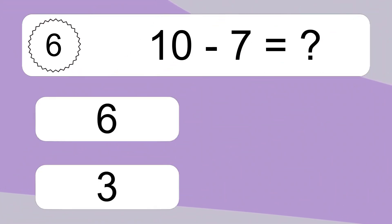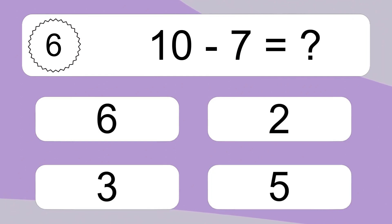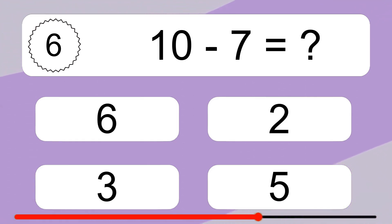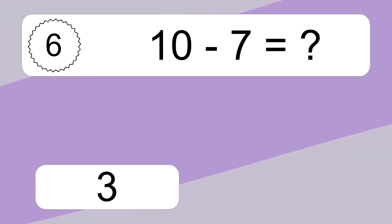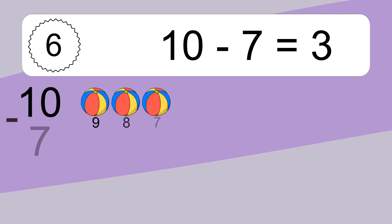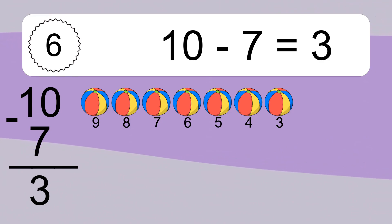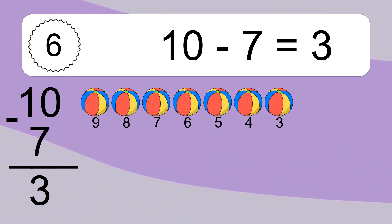10 minus 7 equals what? 10 minus 7 equals 3. Let's count it: 9, 8, 7, 6, 5, 4, 3.